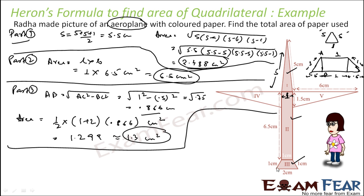To summarize the trapezium: the parallel sides are 1 and 2, and we did not know the perpendicular distance between them. We found that distance using the right triangle ABC and Pythagoras' theorem: AB = root of (AC² − BC²), giving height = 0.866. So we calculated the area of part 3 as 1.3 centimeter square.